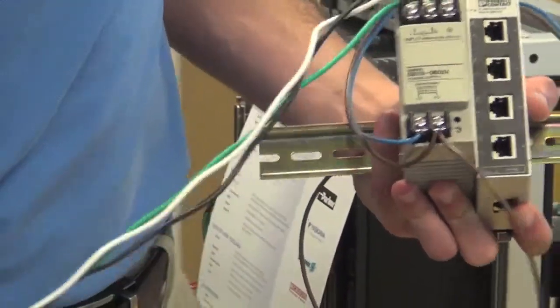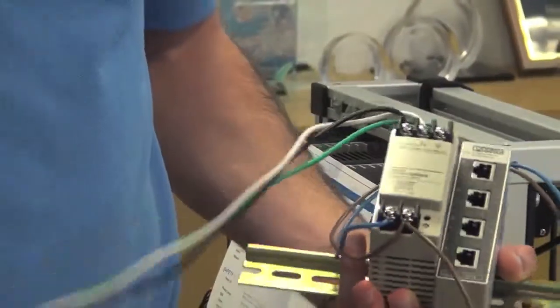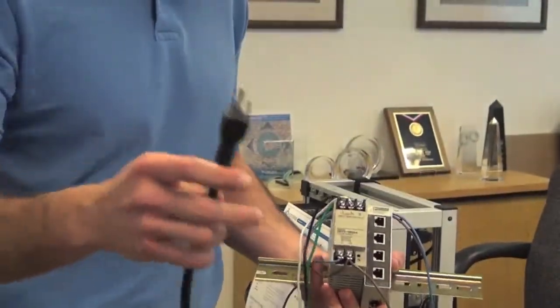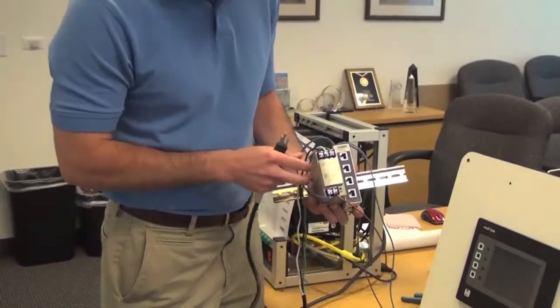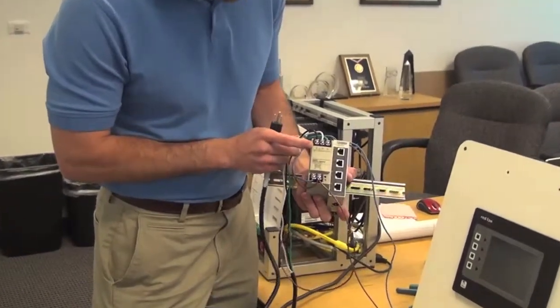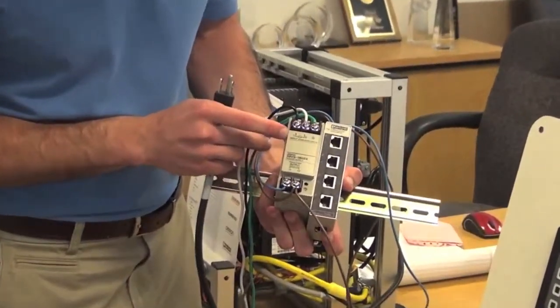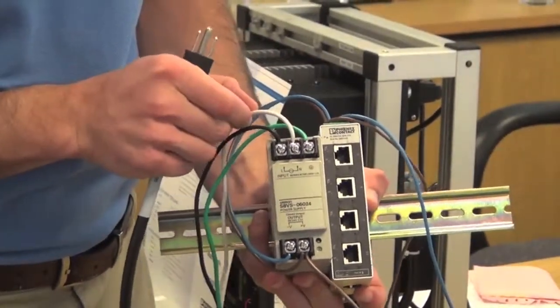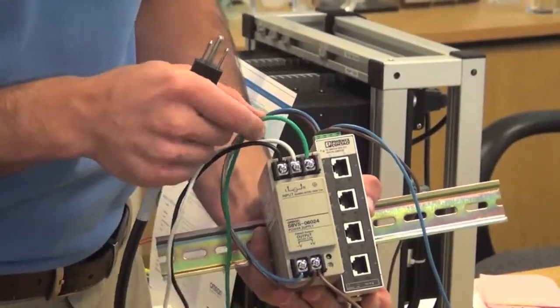We'll take a 120 volts AC cable and land the leads to the Omron power supply. Black goes to L, white goes to neutral or N, green goes to ground.